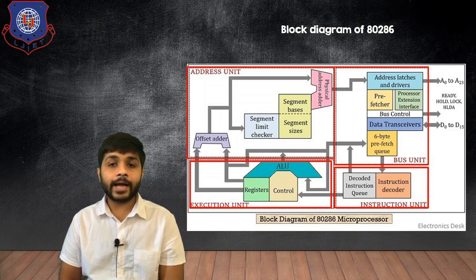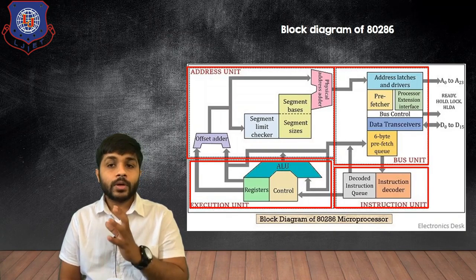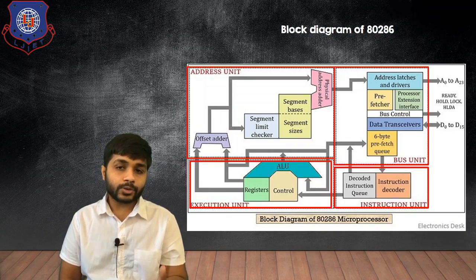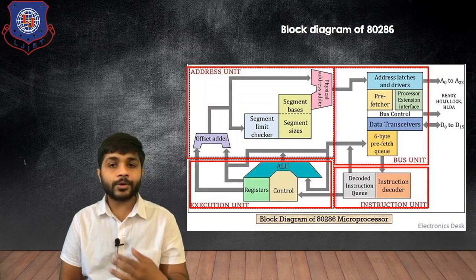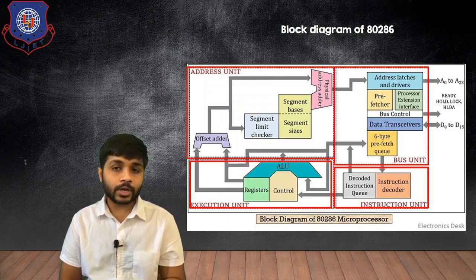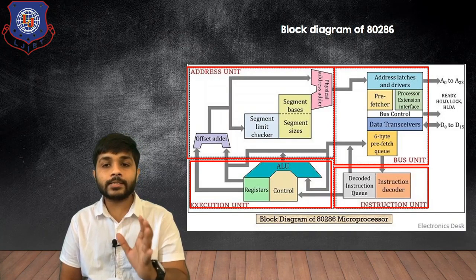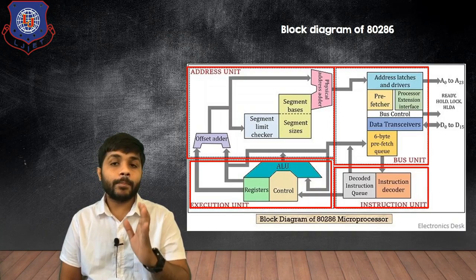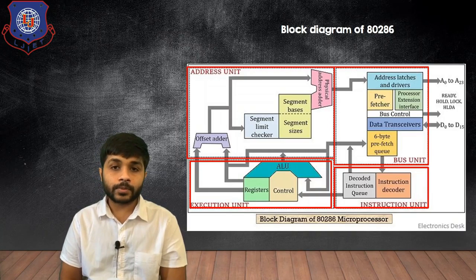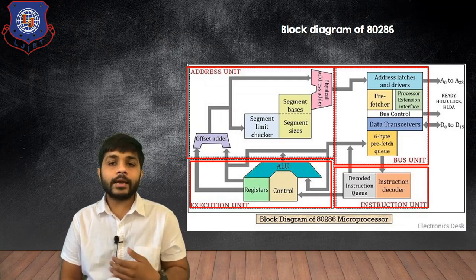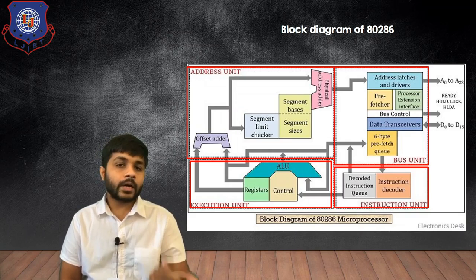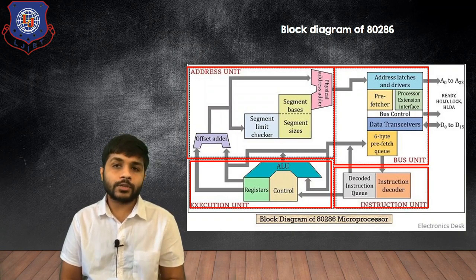The next part is the execution unit. The decoded instruction will be transferred to the execution unit. In this block the processor will execute the instruction and do all the necessary tasks required to execute that particular instruction. In the execution unit there are different blocks such as the arithmetic and logical unit, control unit, and registers.